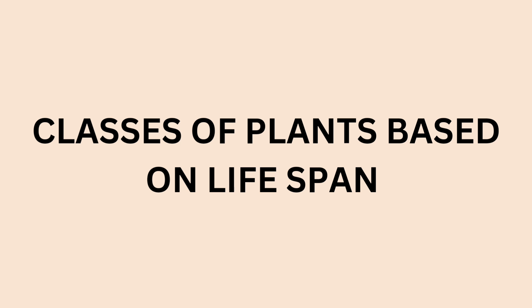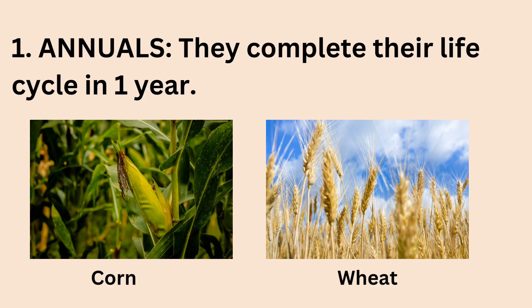So based on this, plants can be classified into three groups. The first class, or the first group, is referred to as the annuals. These plants complete their life cycle in one year. They germinate, grow, give fruit and die off within a year.